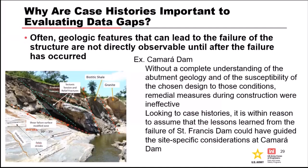Here's another case example — Mara Dam, which Todd had in his presentation. It was a foundation rock wedge failure causing a large breach — five deaths and 3,000 displaced people. They basically rushed construction for political gain without a proper design, and this was the result. Many times these features may not be noticeable if you're not looking for them. If they had looked at the Saint Francis Dam failures, it may have guided them to a different design that could have avoided this.